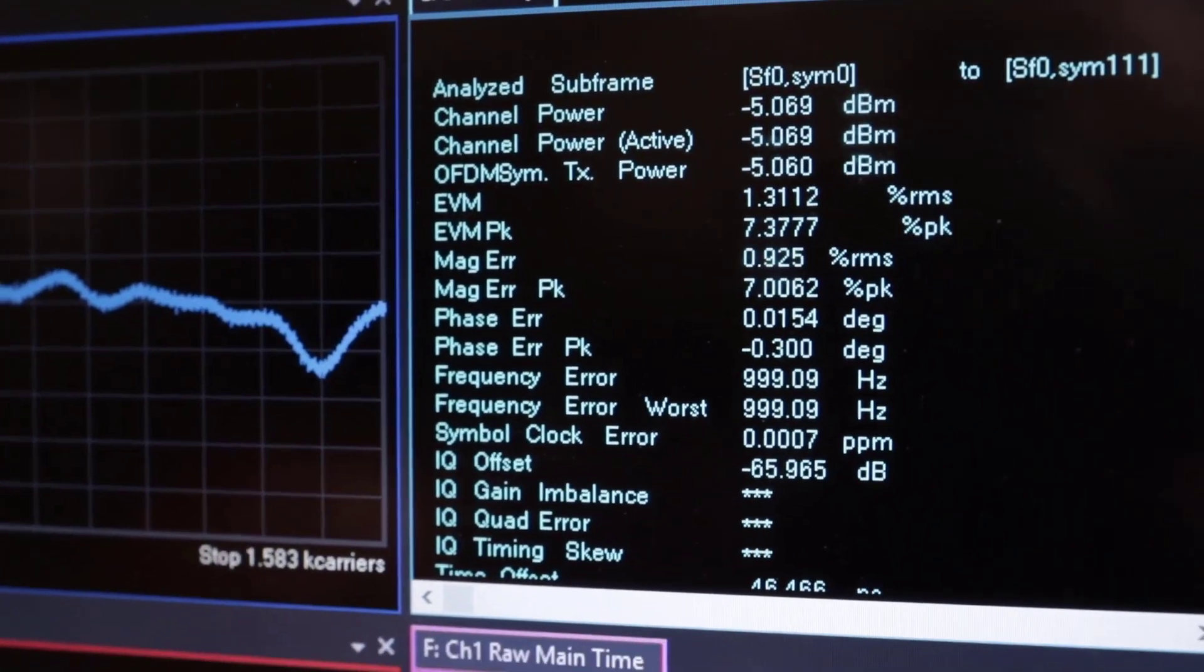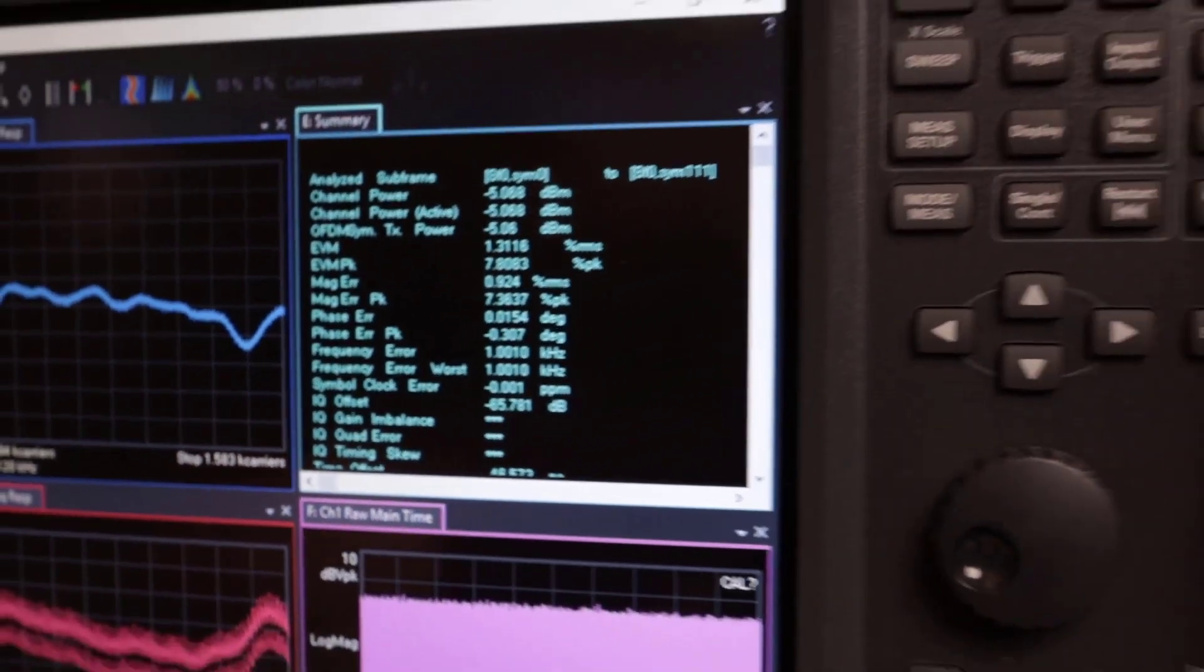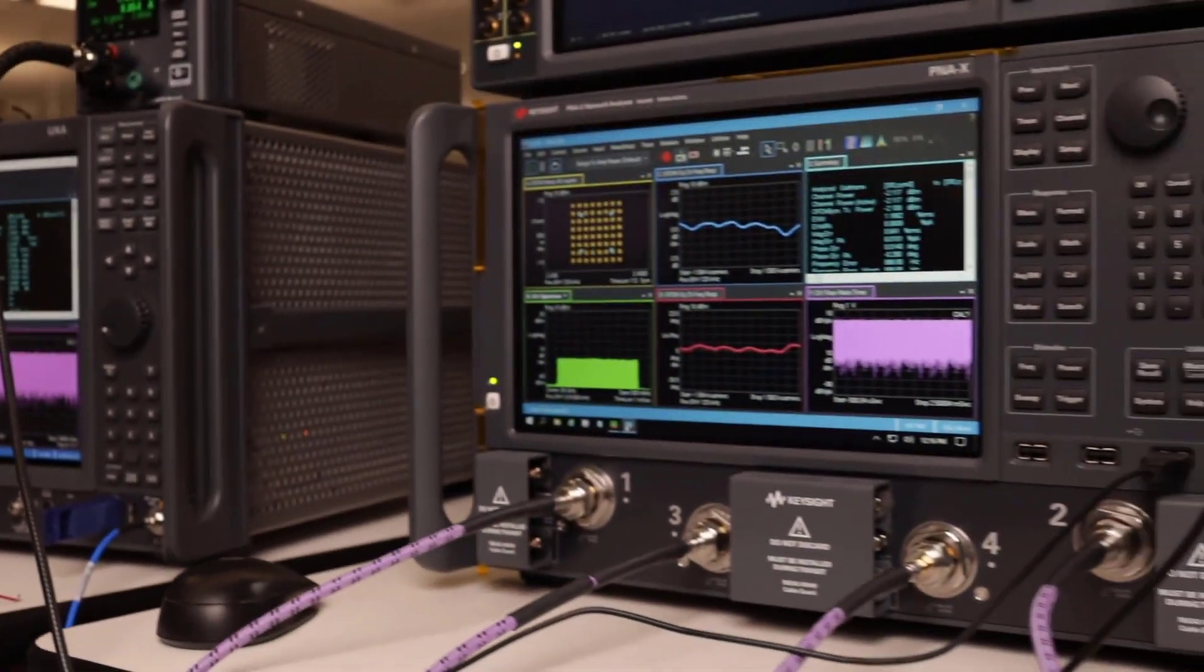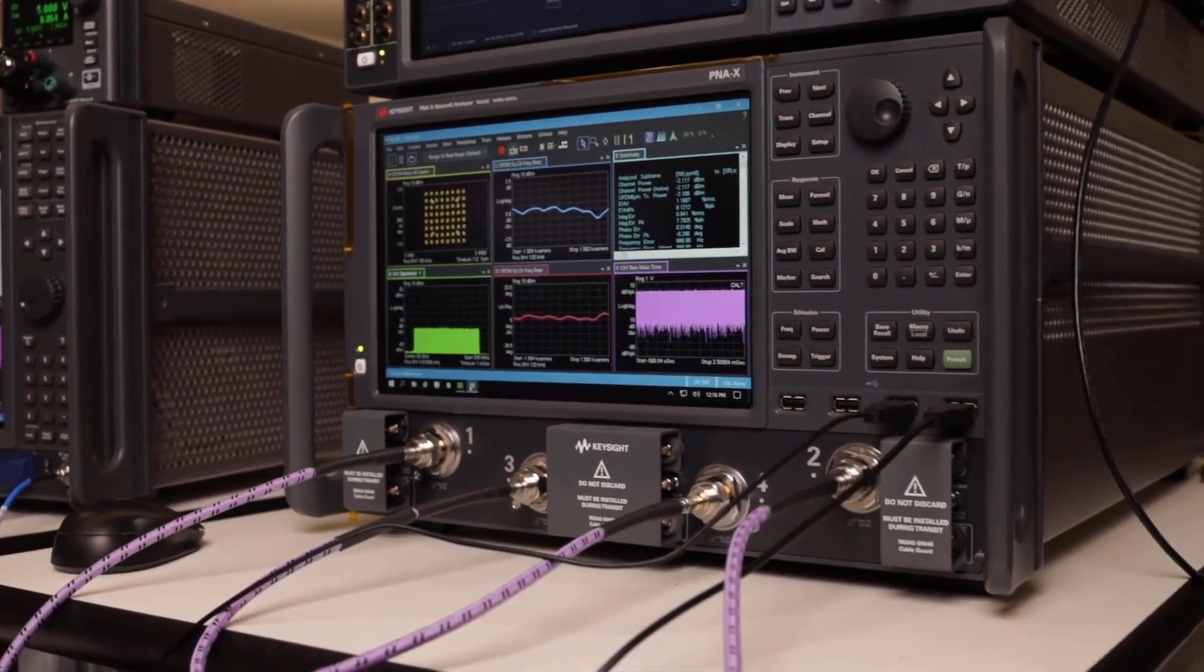And with this proof, you can see that we're now able to fully demodulate 5G NR, 400 MHz, one component carrier at 28 GHz, without the need for any other signal analysis equipment.